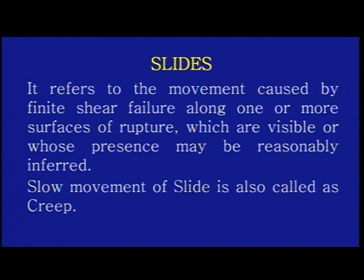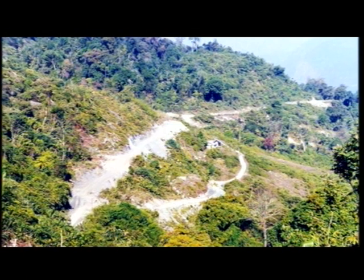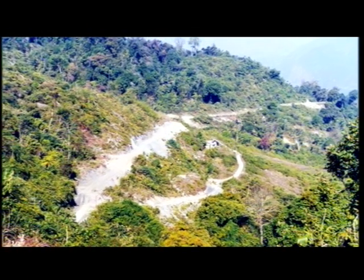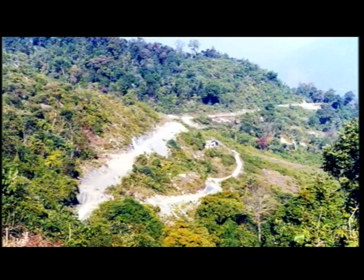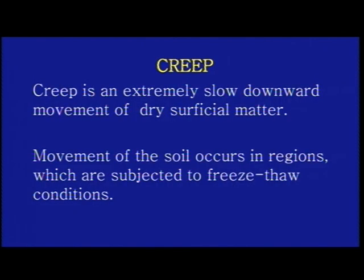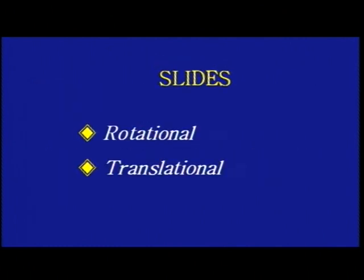Slides refer to movement caused by finite shear failure along one or more surfaces of rupture, which are visible or whose presence may reasonably be inferred. Very slow movement of a slide is called creep. A photograph shows creep in Lower Devong Valley where the road has crept down. Creep is an extremely slow downward movement of dry surficial matter, occurring in regions subjected to freeze-thaw conditions. Slides are of two types: rotational and translational.